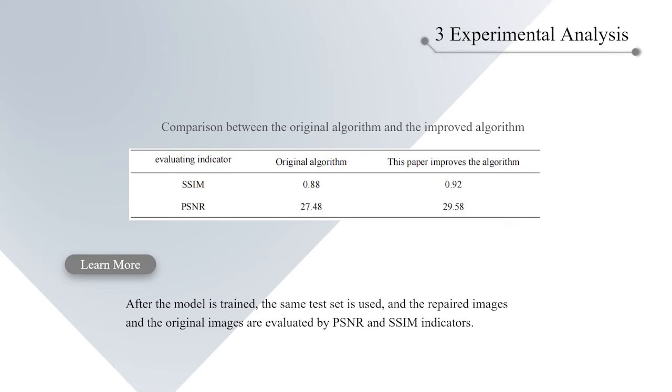The PSNR method mainly calculates the difference between the pixel values of the original picture and the pictures after occlusion repair. It can measure whether the repaired image has distortion and the difference between images. From the data point of view, the image repair is better after the algorithm is improved.